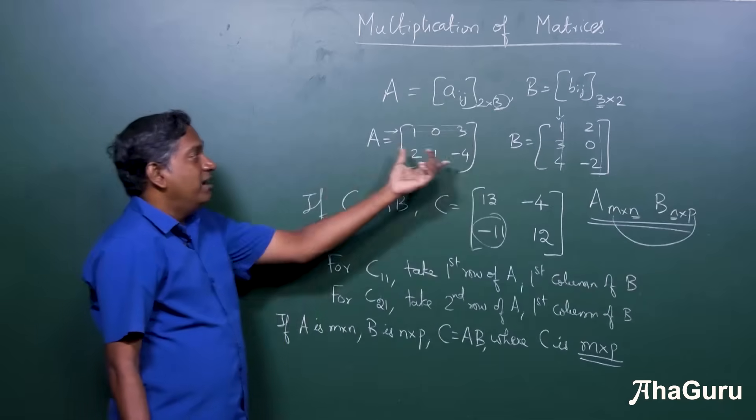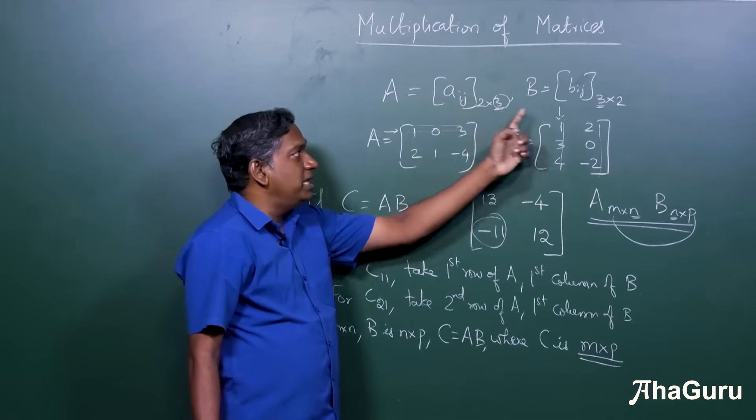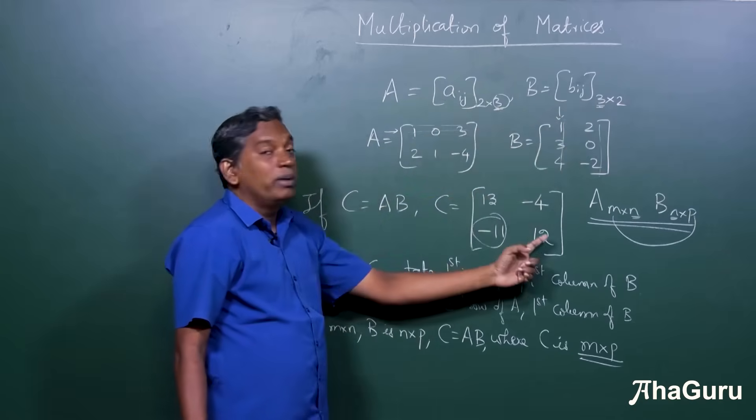So what does it mean? In our example, it is 2 by 3, 3 by 2, so it became 2 by 2.